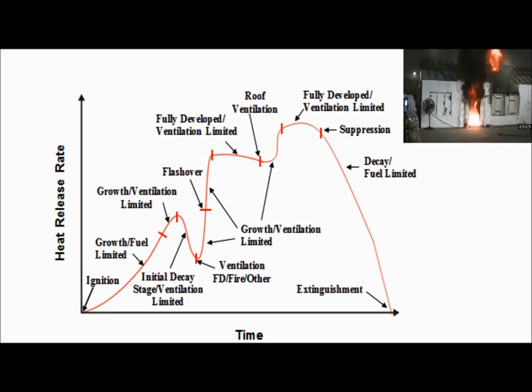A lot of folks believe that when fire is showing from the structure, it's vented — we're all good, it's coming out. Well, you're all good because you know where it is. But if you keep making openings to a ventilation-limited fire, you will keep having fire coming out of those openings.